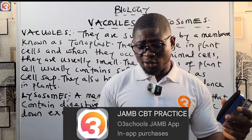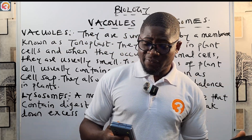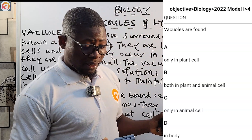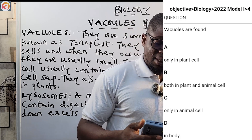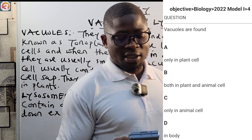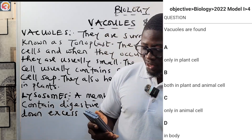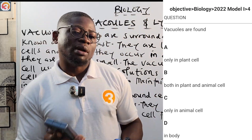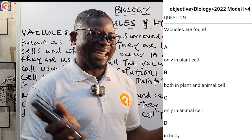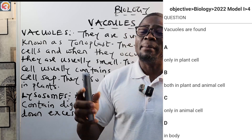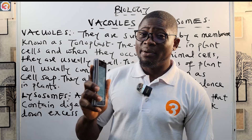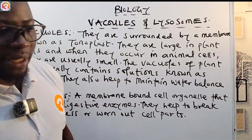Before we begin, let us look at a question. This is a 2022 question number four: 'Vacuoles are found — A: only in plant cells, B: both in plant and animal cells, C: only in animal cells, D: in the body.' We are going to talk about vacuoles and lysosomes, then come back at the end of the class to answer this question and many more from the application.